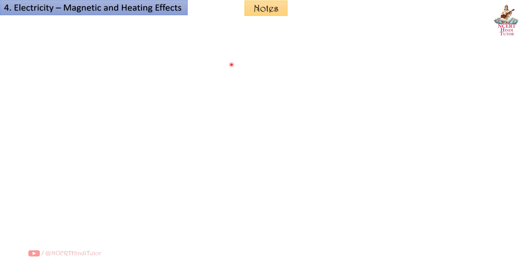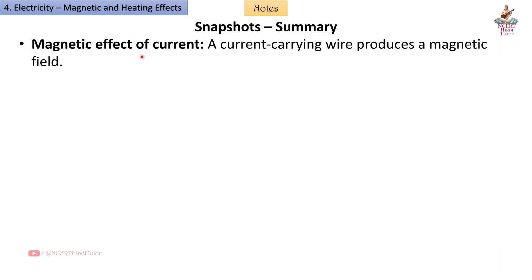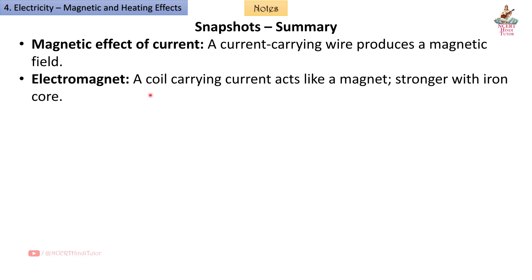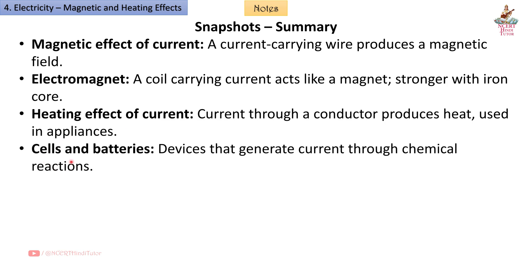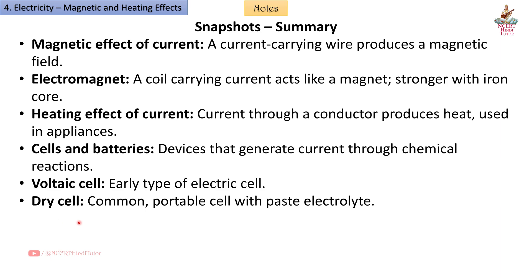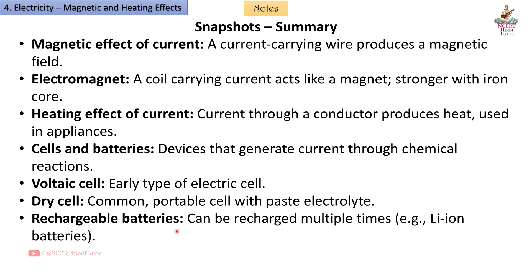Snapshot Summary — Magnetic effect of current: a current-carrying wire produces a magnetic field. Electromagnet: a coil carrying current acts like a magnet, stronger with an iron core. Heating effect of current: current through a conductor produces heat, used in appliances. Cells and batteries: devices that generate current through chemical reactions. Voltaic cell: early type of electric cell. Dry cell: common portable cell with paste electrolyte. Rechargeable batteries: can be recharged multiple times — example: lithium-ion batteries.